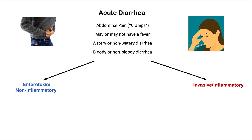In the invasive or inflammatory category, an infectious agent — oftentimes a bacteria — penetrates and invades into the gastrointestinal lining. This leads to damage and destruction of GI cells, and can cause breakage of blood vessels leading to bloody diarrhea. Because it's invading into the tissue, the body responds by recruiting white blood cells into the area, causing inflammation of the GI area and usually a fever as well.